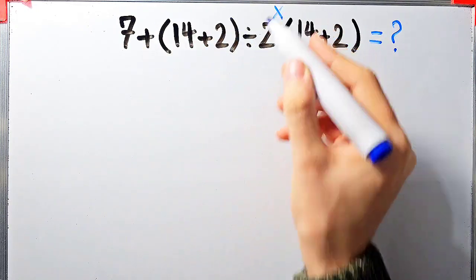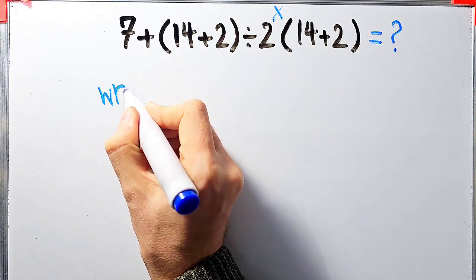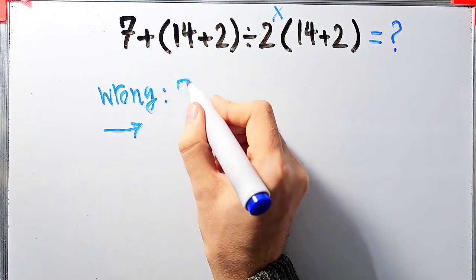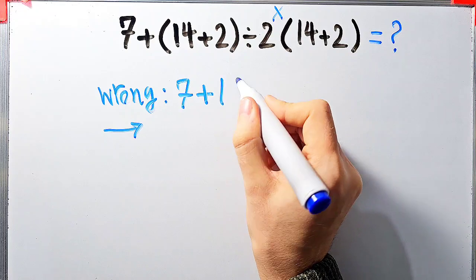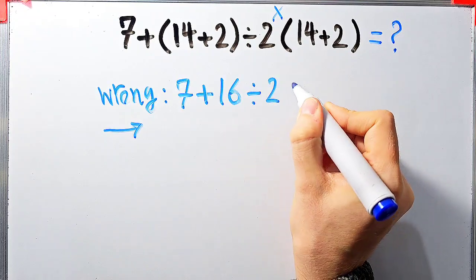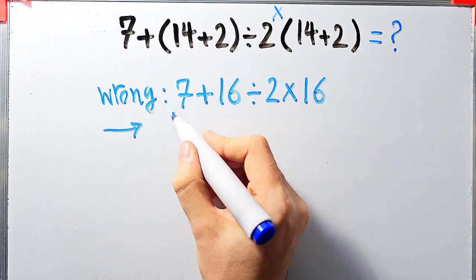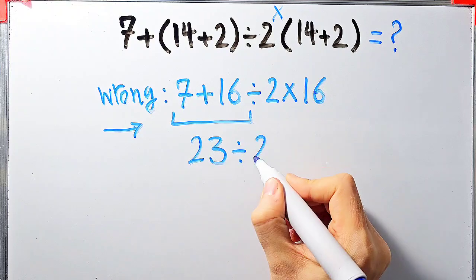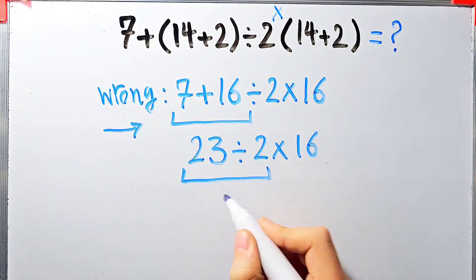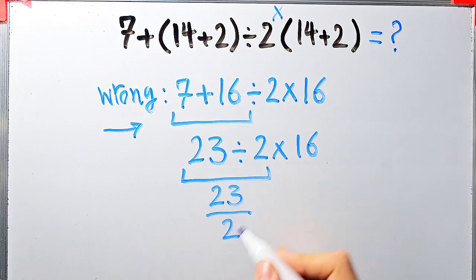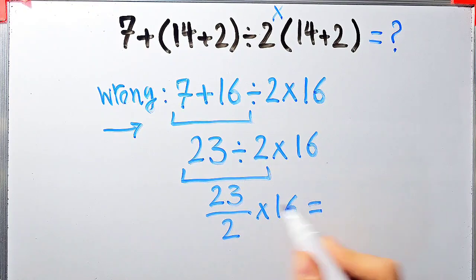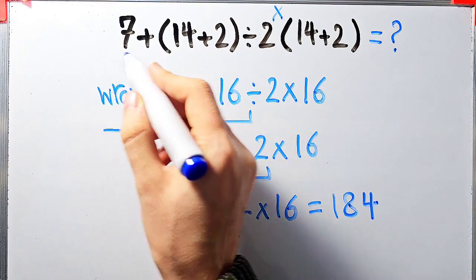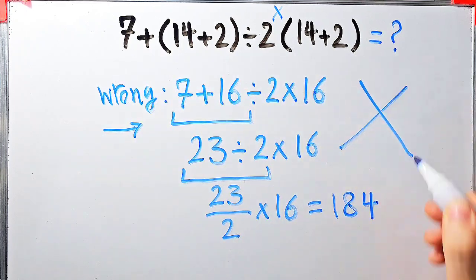In this question we have addition, parentheses, division, and multiplication. Some people solve this question incorrectly — they start from the left without paying attention to the priority of operations: 7 plus 14 plus 2 equals 16, divided by 2, then times 16. They simplify left to right: 7 plus 16 equals 23, 23 divided by 2, times 16 equals 184. They say the final answer equals 184, but this answer is definitely wrong.